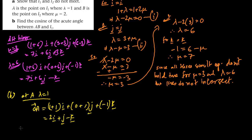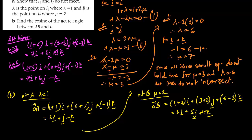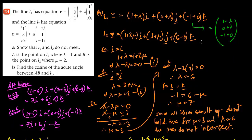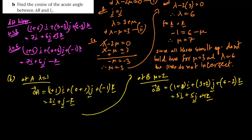At point B, μ = 2. OB = (1 + 2·2)i + (3 + 2)j + (6 − 2)k = 5i + 5j + 4k.